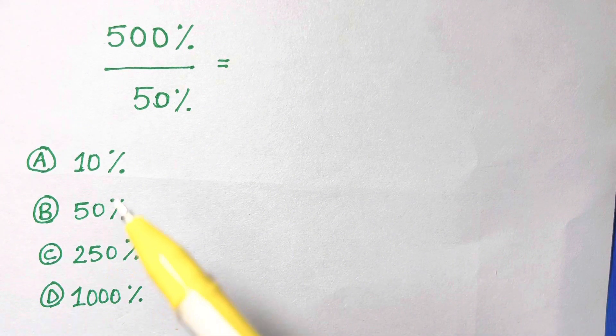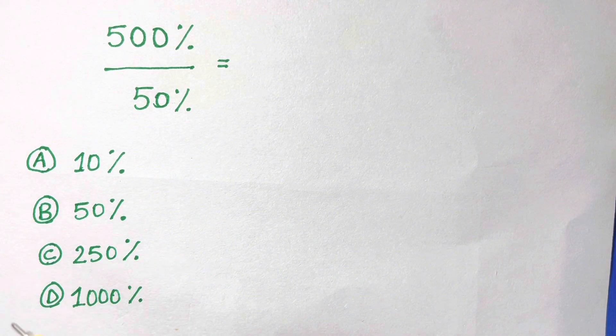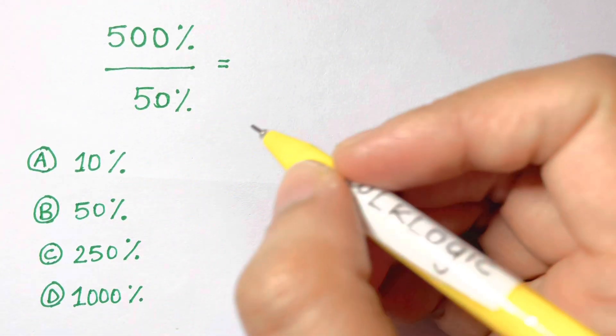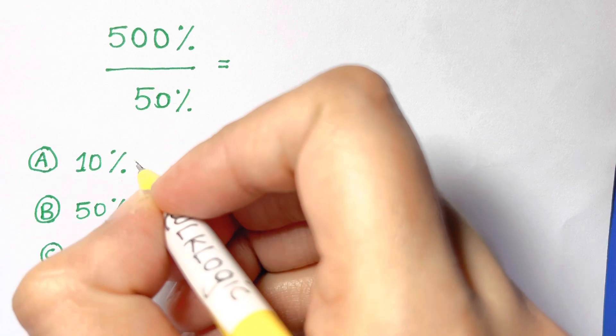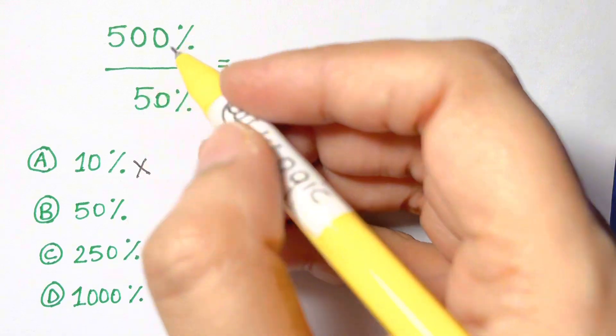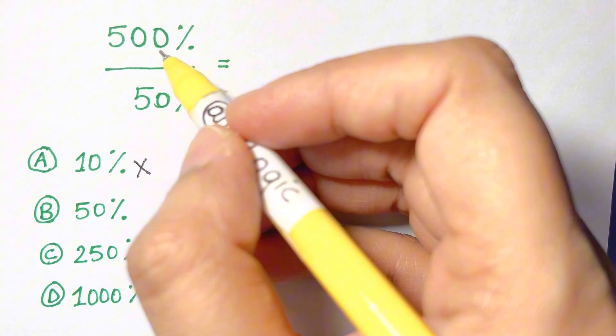Now you cannot say 500 over 50 and that's 10 - no, that's wrong, so 10 is not right. Let's try another one. First of all, what we have to do is - this is in percentage - let's convert it into decimals.